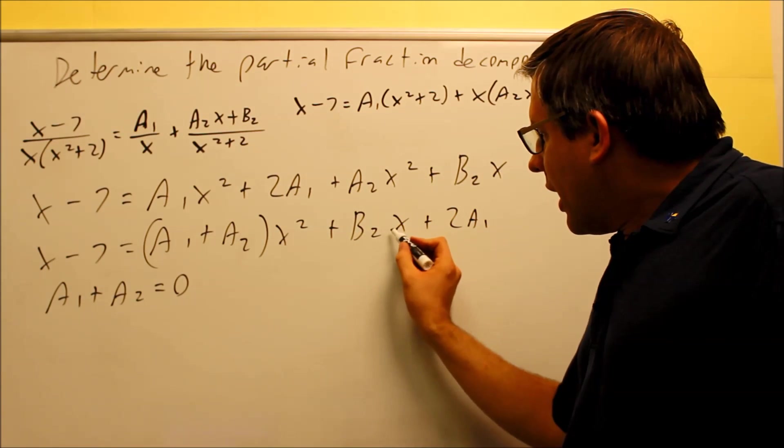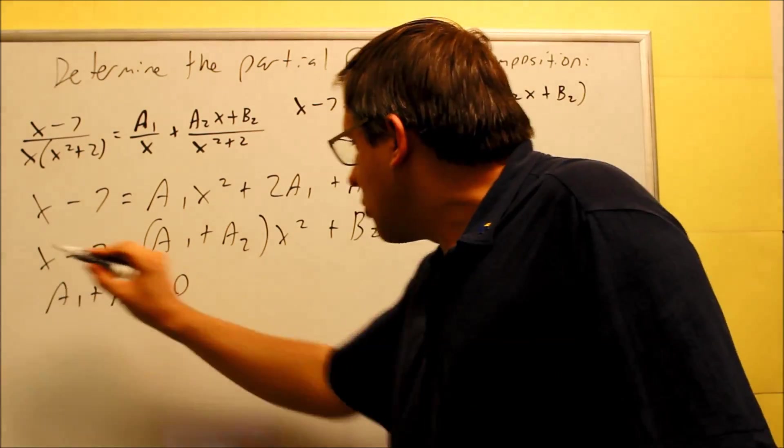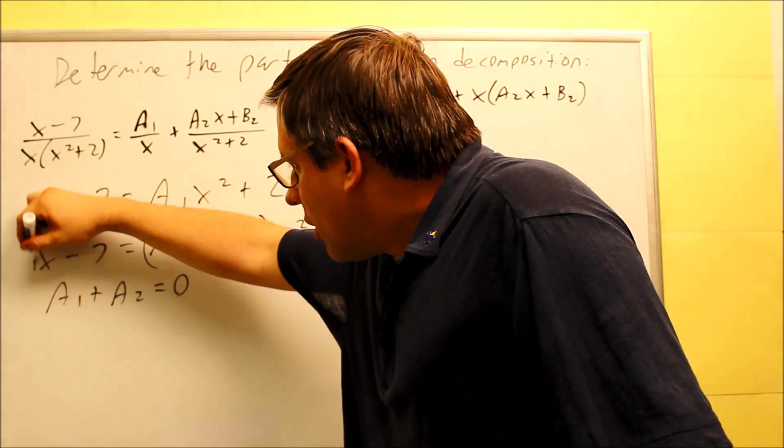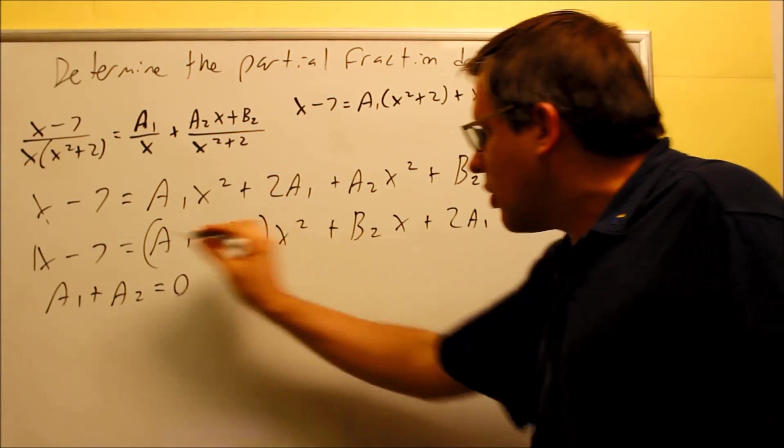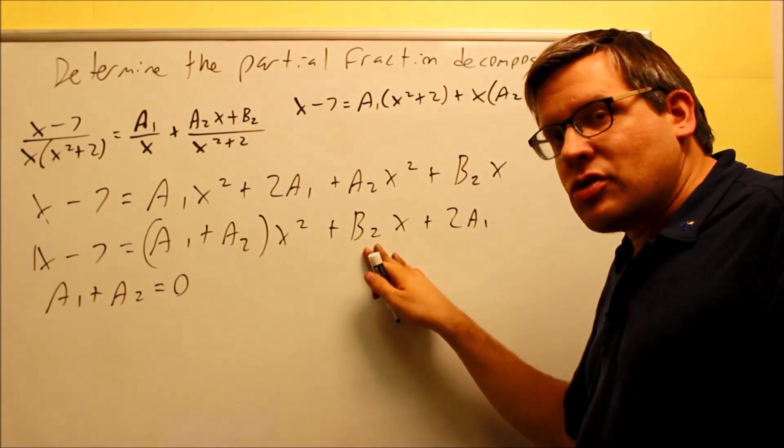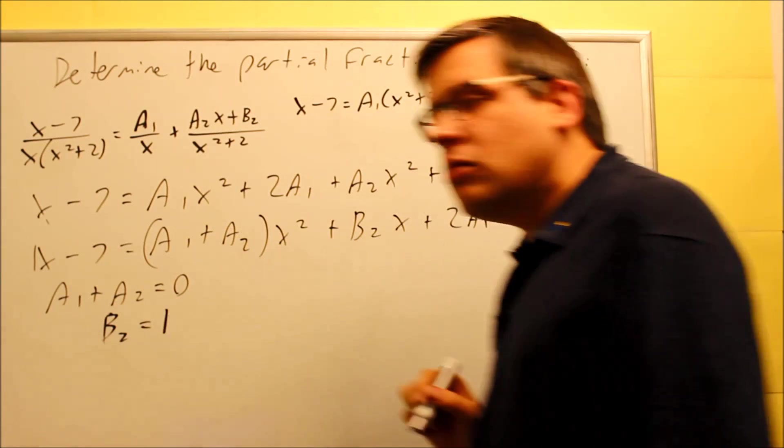Now, we have only one x term here. Well, we only have one x term over here. So, the coefficient on the x over here is a 1, which means automatically we know what b2 should be. That is the only x on both sides. That is the only way we can get the coefficients equal is if b2 is equal to 1.